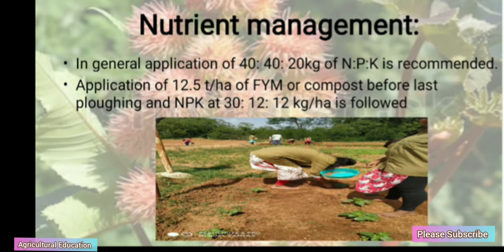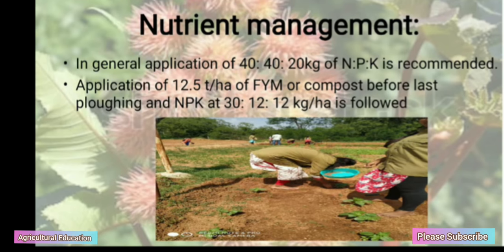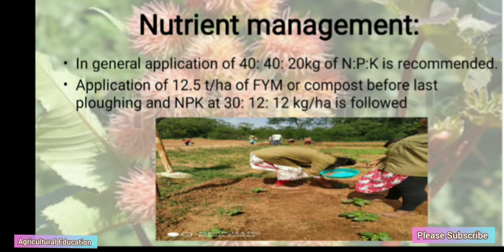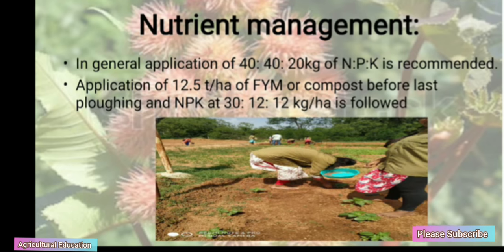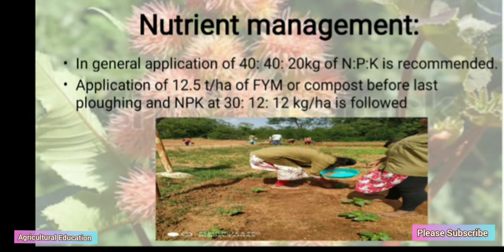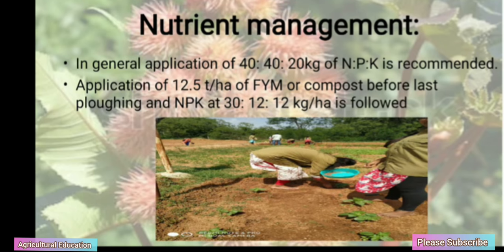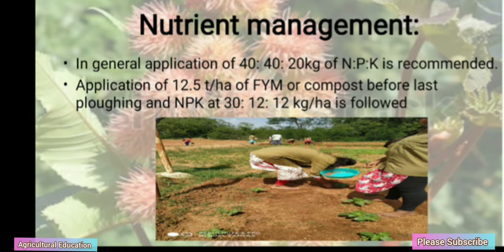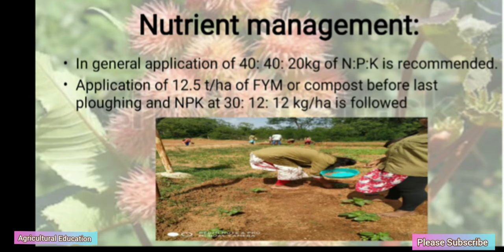Nutrient Management: In general, application of 40-40-20 kg of NPK is recommended. Application of 12.5 tons of farmyard manure per hectare or compost before last ploughing. NPK at 30:12:12 kg per hectare is followed at the flowering stage.